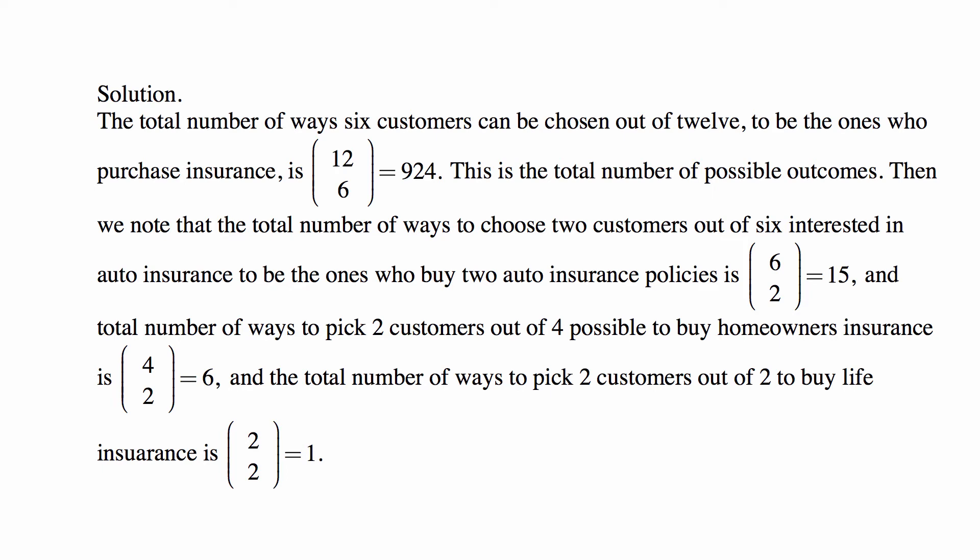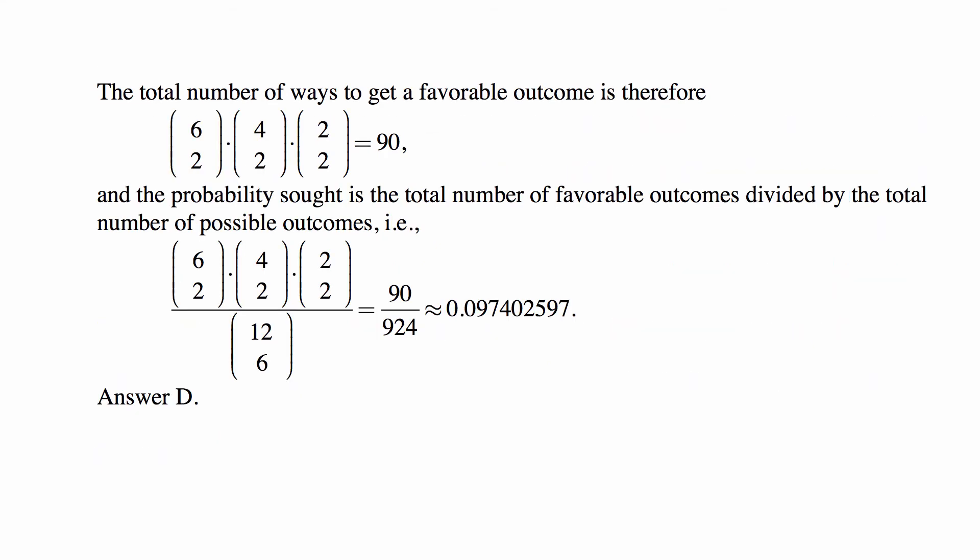So this is the total number of possible outcomes. Then we note that when choosing two customers out of six... well, there's only one way to pick two people out of two people. So the total number of ways to pick two customers out of two to buy life insurance, and the number...